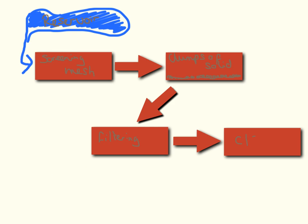First of all the water gets treated to make it safe to drink. The reservoir feeds a number of tanks, and these tanks are generally on different levels to help the flow of water go down. First we remove all the big bits — all the twigs, big lumps of rock, dead things — using a big mesh, like a sieve, that takes out all the big stuff. Then it's treated so that all the little bits of dirt and bacteria form clumps, and all these clumps settle to the bottom.